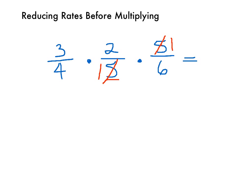The greatest common factor of 4 and 2 is 2, so we can cancel those out. 4 divided by 2 is 2. 2 divided by 2 is 1.